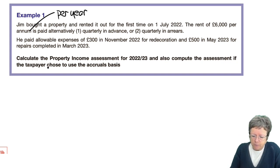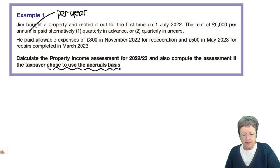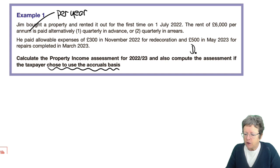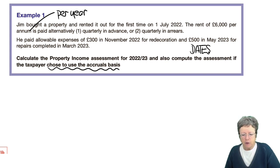Alternatively, the third situation shown at the bottom is an accruals basis — so this example covers all three different ways. The expenses were £300 in November 2022 for redecoration, which is an allowable expense, and then £500 in May 2023. Read every question carefully, because May 2023 is in next year, not this year. That will have an impact for repairs that were completed in March 2023.